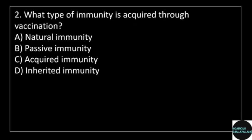2nd question: What type of immunity is acquired through vaccination? Answer options: option A, natural immunity; option B, passive immunity; option C, acquired immunity; option D, inherited immunity.